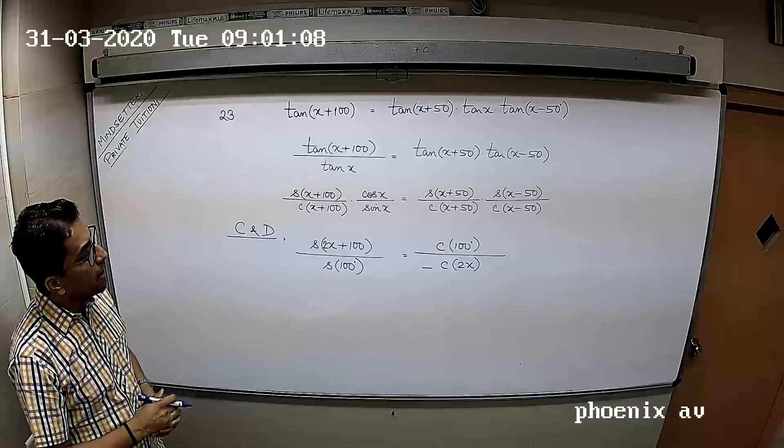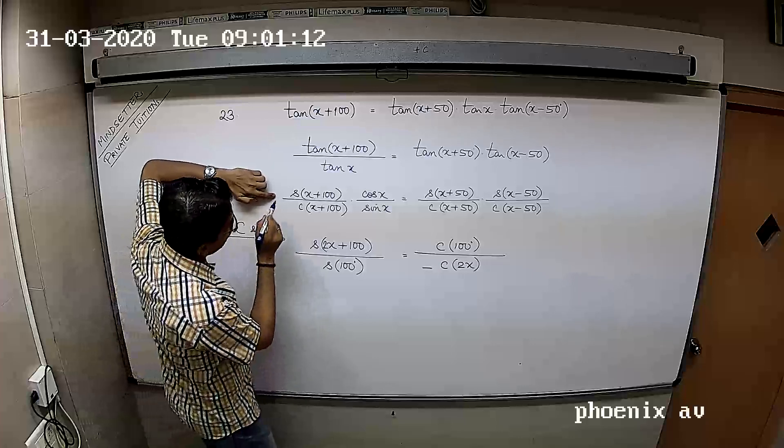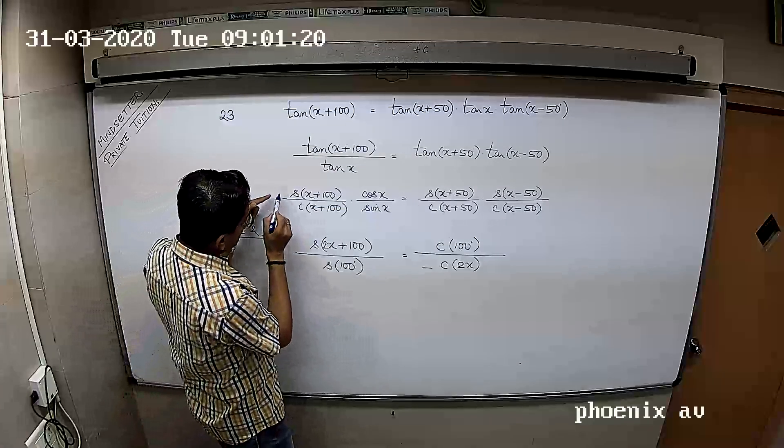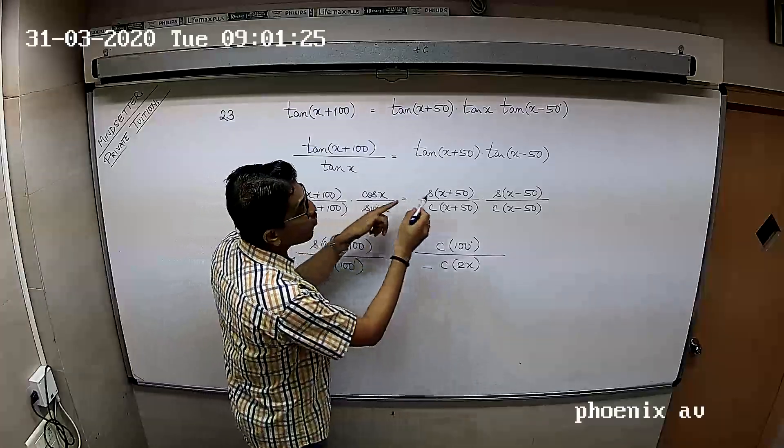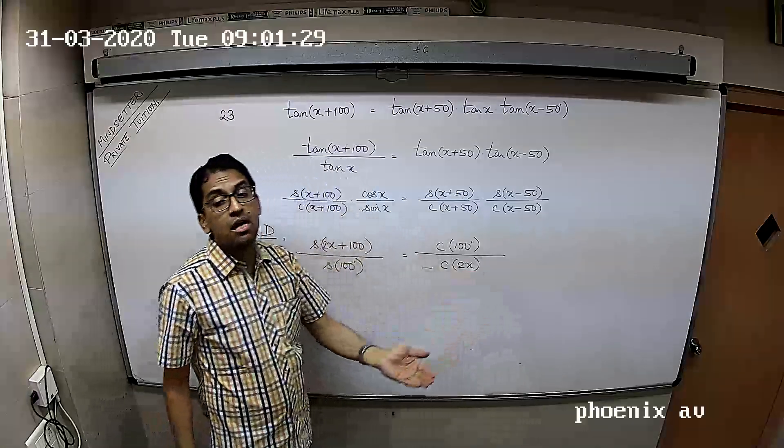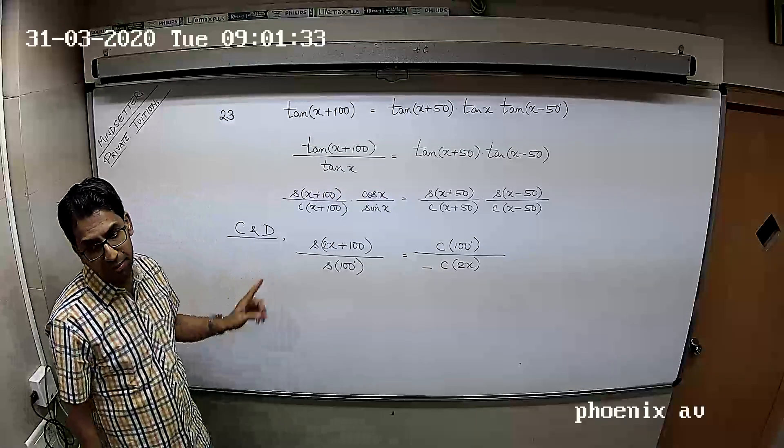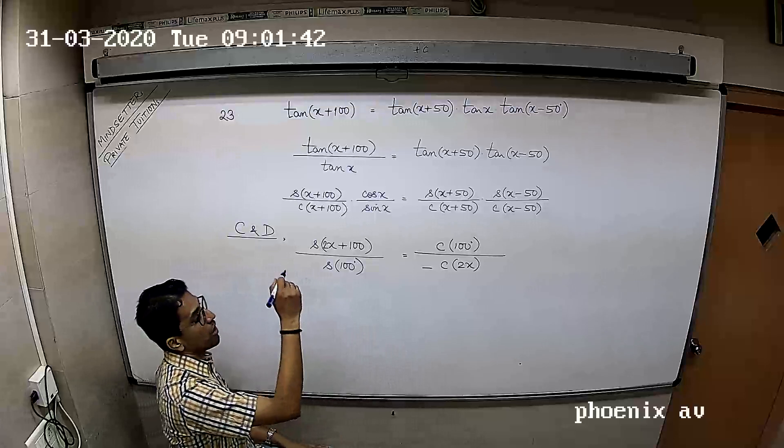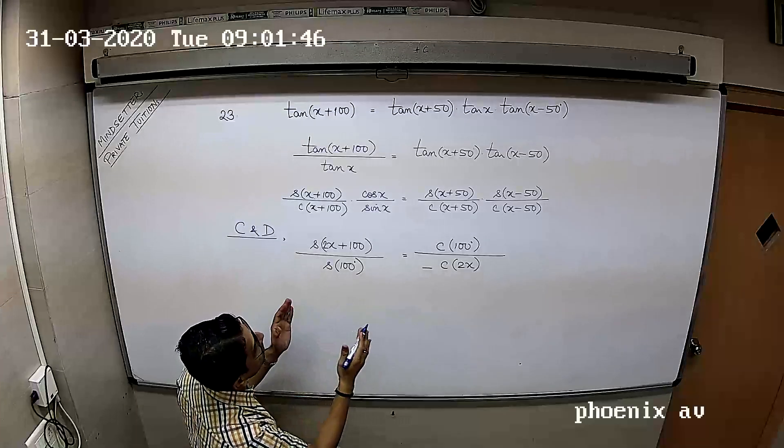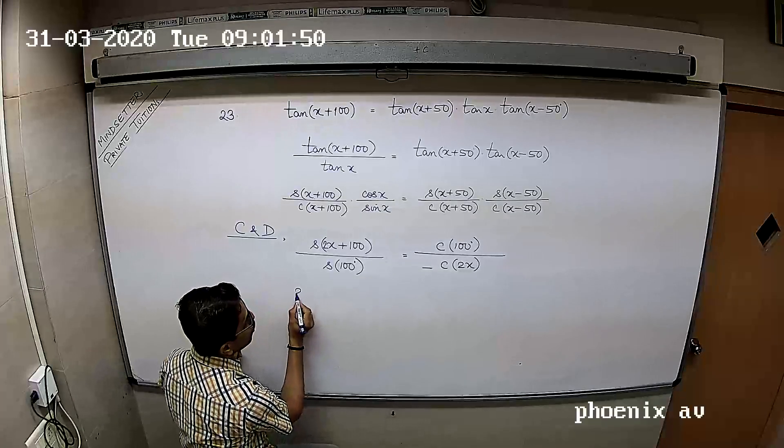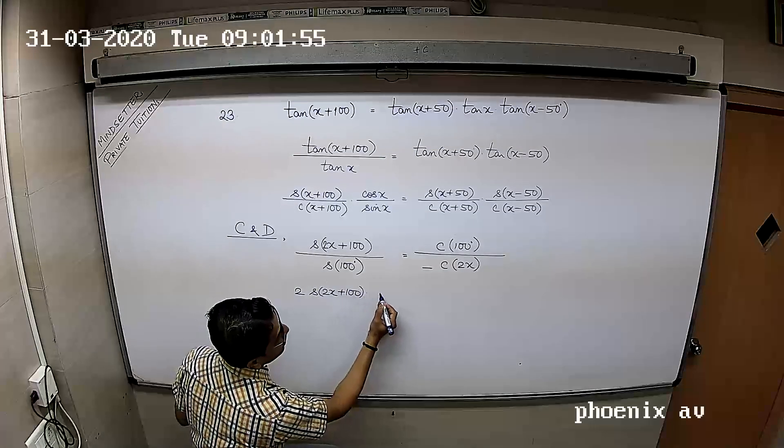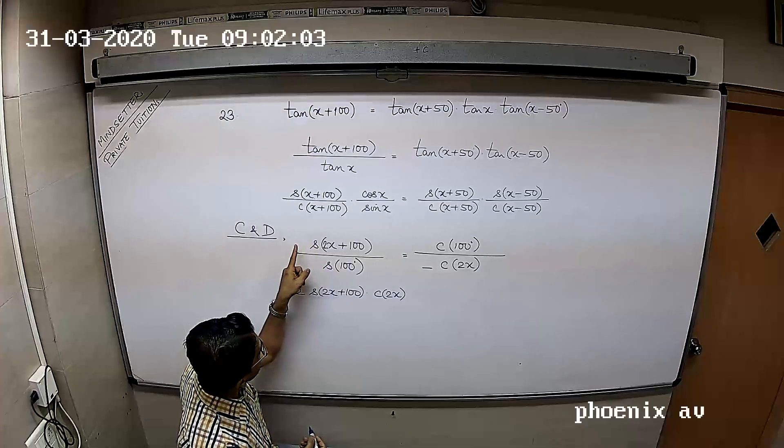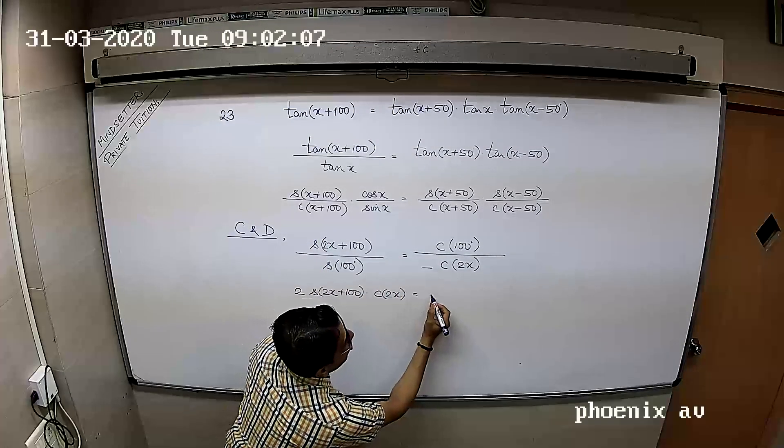Everyone, at this stage you could have multiplied by 2 throughout. This will become 2 sine C cos D, 2 cos C sine D, 2 sine A sine B, cos A cos B. You could have done that fact, but ultimately we're confident to divide and so, might as well just go ahead and do it this way. Now for further simplification, can I write 2 sine of 2X plus 100 into cos of 2X?